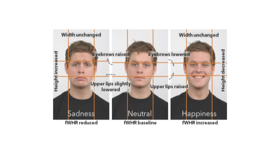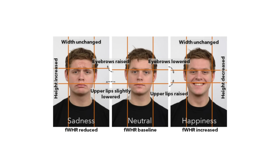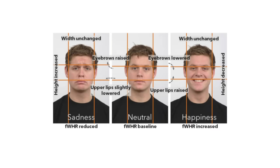This image shows how having different facial expressions can also change your facial width to height ratio. Smiling does seem to increase your FWHR by raising the upper lip and lowering the brows. This is interesting because smiling doesn't usually equal dominance or aggression, but then again maybe it does in a sense. A sad face lowers the facial width to height ratio, which can give off the impression of a less dominant face.